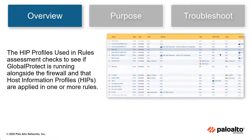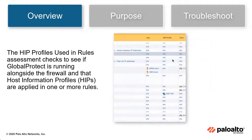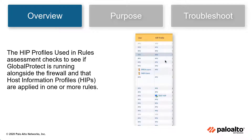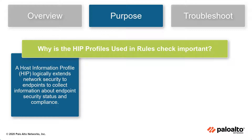The HIP profiles used in rules assessment checks to see if GlobalProtect is running alongside the firewall. A host information profile (HIP) logically extends network security to endpoints to collect information about endpoint security status and ensure comprehensive and consistent security compliance and enforcement.